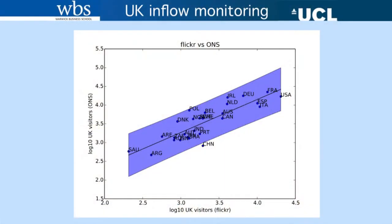I've done this for the whole dataset of 1.7 million users. This picture shows UK visitors by country as estimated by the Flickr dataset and as estimated by the official Office for National Statistics. Even though the Flickr dataset is certainly more biased than the official statistics, there is quite good agreement, with France, USA, and various other European countries at the top.